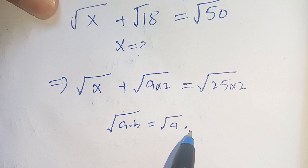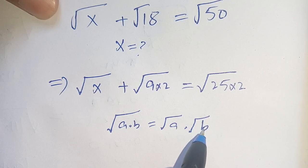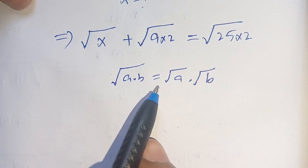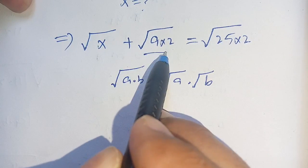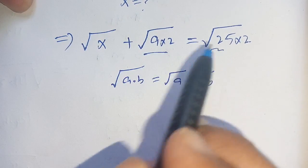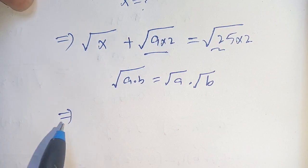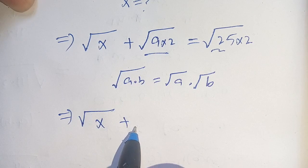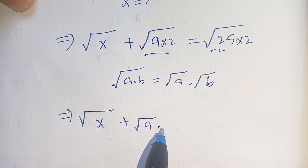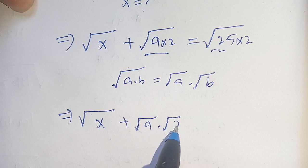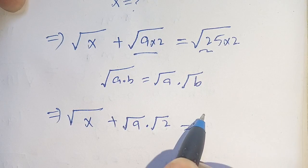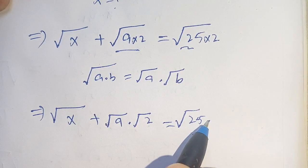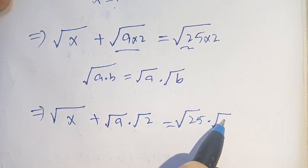We know that square root of a times b is equal to square root of a times square root of b. We use this identity in both terms and get: square root of x plus square root of 9 times square root of 2 is equal to square root of 25 times square root of 2.